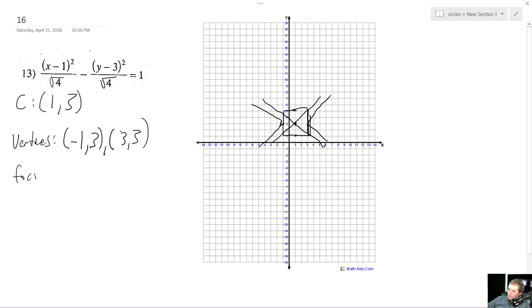And the foci are added left to right on the center. So it's going to be equal to a squared plus b squared. This is going to be the square root of a squared plus b squared. So it's going to be the square root of 8, which is equal to 2 root 2.